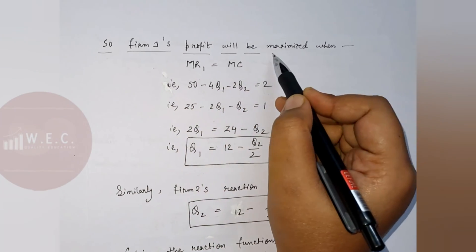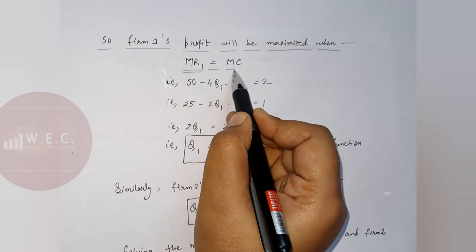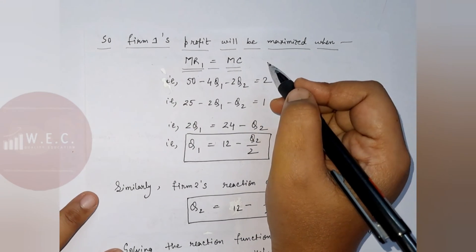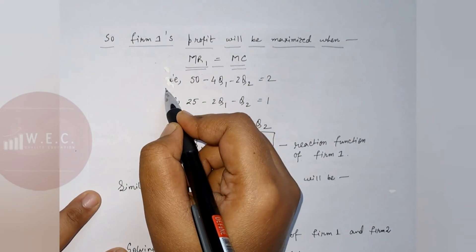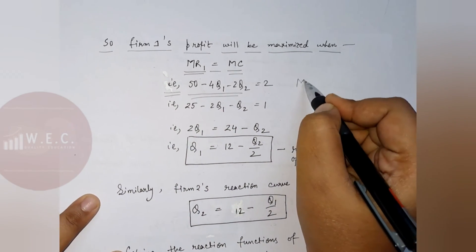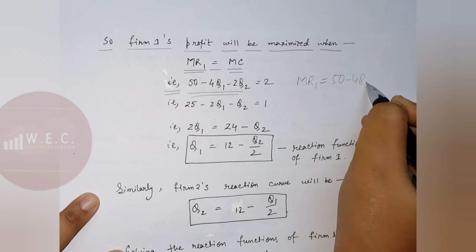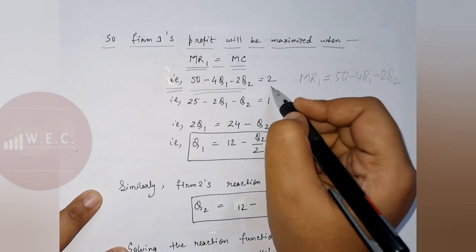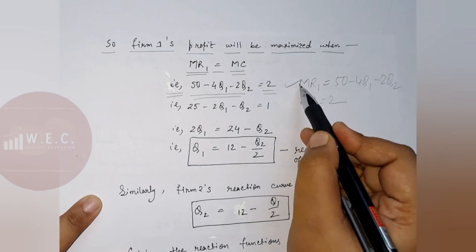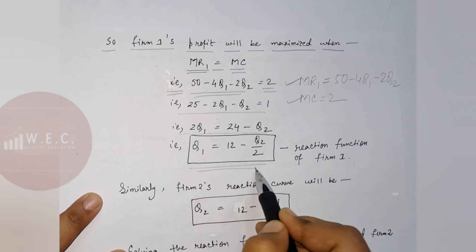Firm 1's profit is maximized using the condition MR equals MC. So Firm 1's profit is maximized at MR1 equals MC. We know MR1 equals 50 minus 4Q1 minus 2Q2 and MC equals 2. From this we can derive the reaction function of Firm 1.